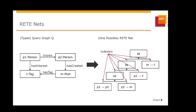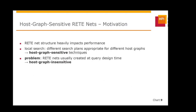For the same query graph, there can be a multitude of different retinets with different structures. The structure of the retinet heavily impacts performance with respect to both memory consumption and execution time. This is similar to the concept of a search plan from local search graph query execution, where the ordering in which vertices are mapped plays a very important role in performance. There is a lot of work on computing efficient search plans, and most well-performing techniques are so-called host graph sensitive techniques, which take properties of the host graph into account.